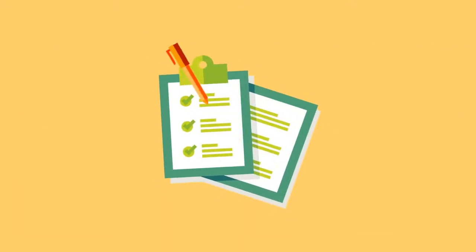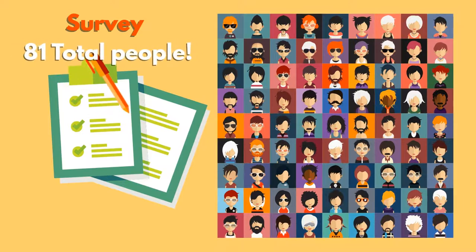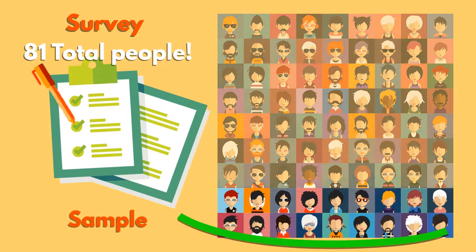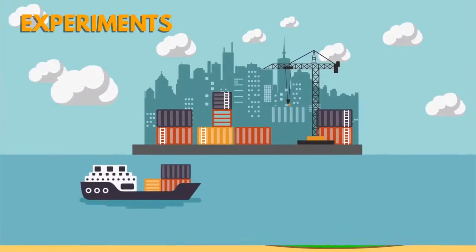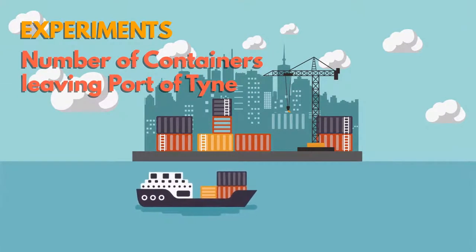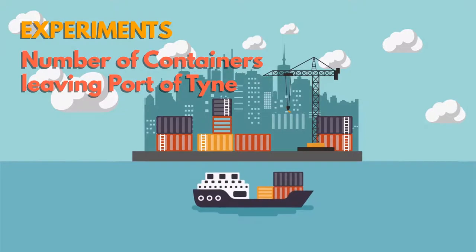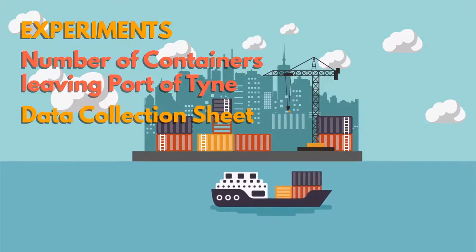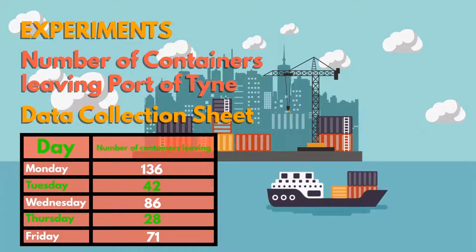Data can be collected from many sources. A survey, for example, in which questions may be posed to everyone or just to a sample of the population. Experiments are another source of data, such as observations in science or geography. The data is recorded on a data collection sheet in the form of a grid, chart or table.